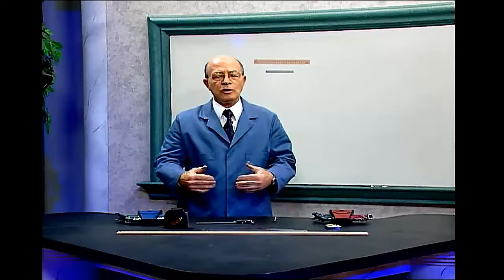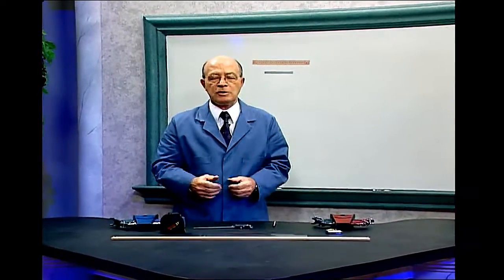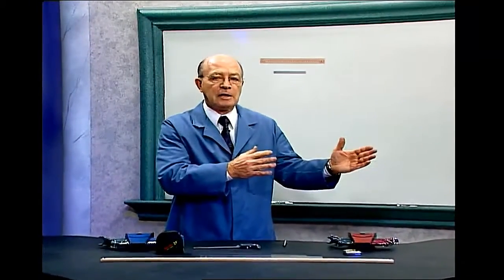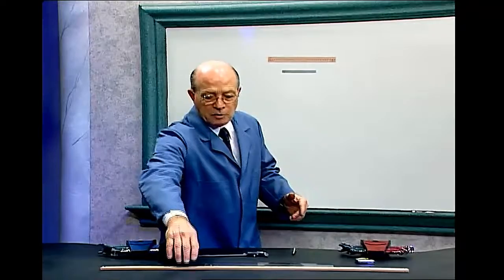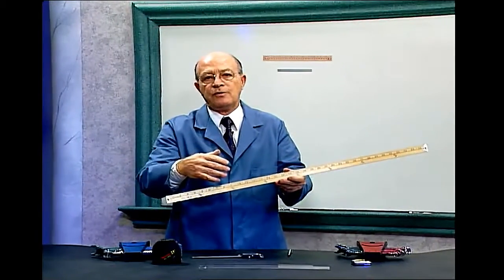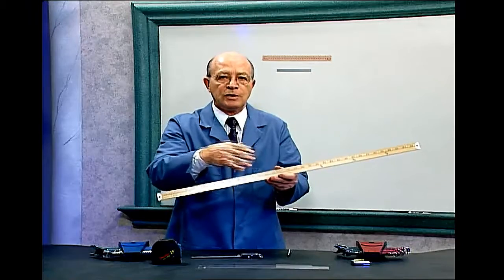Some rulers are divided into tenths and hundredths. One of the reasons is, remember the previous lesson, the difficulty with the fractional ruler when you get to one sixty-fourth or five sixty-fourths or fifteen sixty-fourths. It's hard to remember those numbers because they get so long.